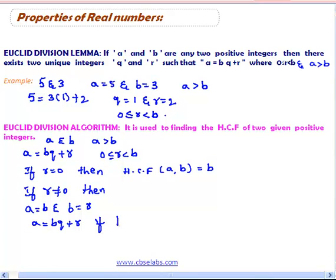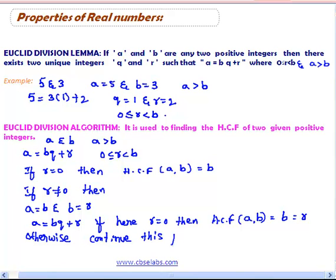If here r is equal to 0 then HCF of a, b is equal to b which is equal to r. Otherwise continue this process until you get r is equal to 0.